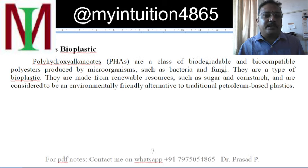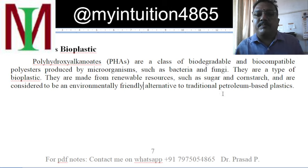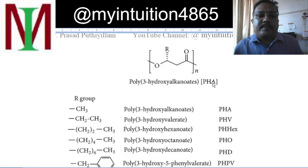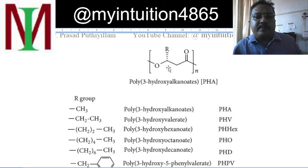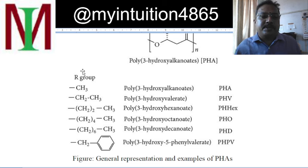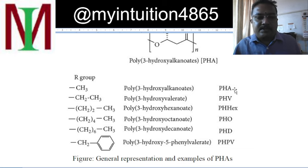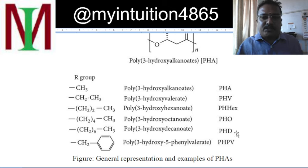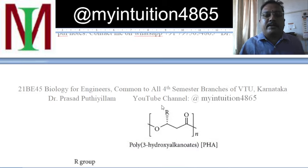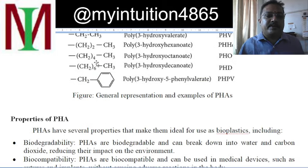PHAs are a type of bioplastic made from renewable resources such as sugar and corn starch, and are environmentally friendly — an alternative to petroleum-based plastics. The common name is poly-3-hydroxyalkanoate, where R represents an alkyl group such as CH3, CH2CH3, etc. Different R groups give different forms: poly-3-hydroxybutyrate, poly-3-hydroxyvalerate, hexanoate, octanoate, etc. — abbreviated in the market as PHB, PHV, PHO, PHBV, and similar short forms.